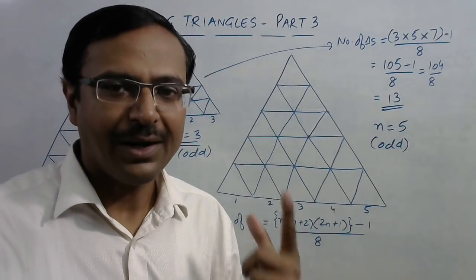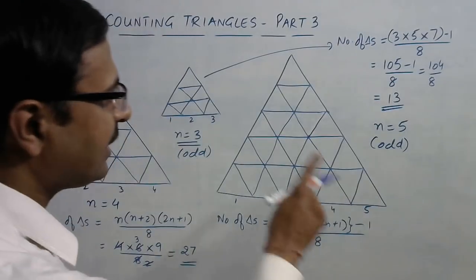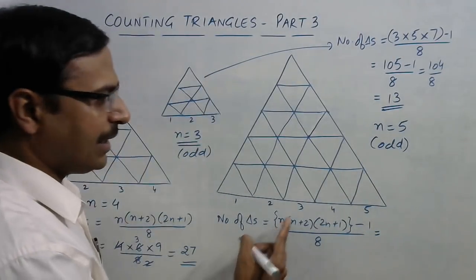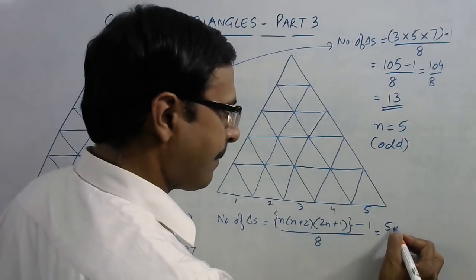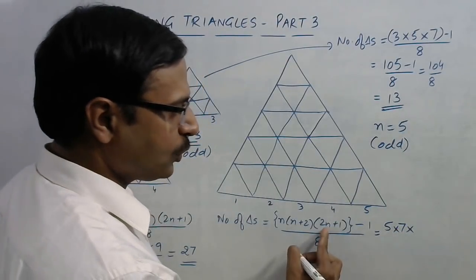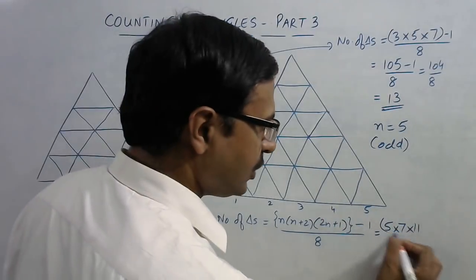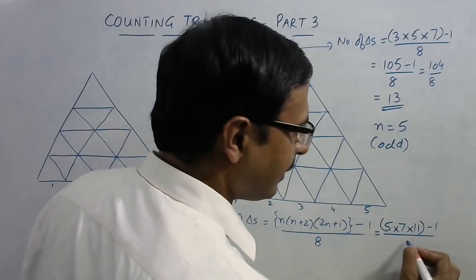So let's apply the formula here now. We have n as five here, so five, n+2 is seven, so 5×2=10+1=11, so five into seven into eleven, and you need to subtract one from this and divide it by eight.